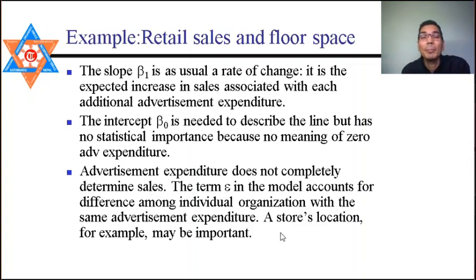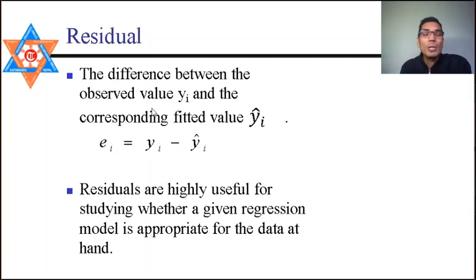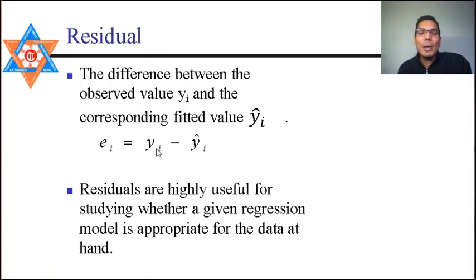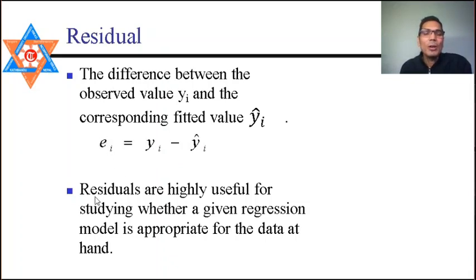The difference between the observed value yᵢ and the fitted value ŷᵢ is denoted eᵢ = yᵢ − ŷᵢ. This is called the residual or error term. Residuals are highly useful for studying whether the given regression model is appropriate for the data.